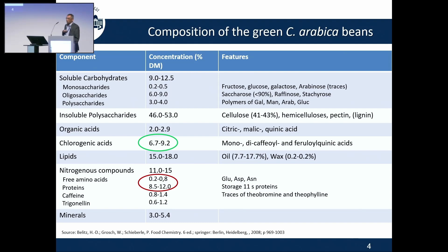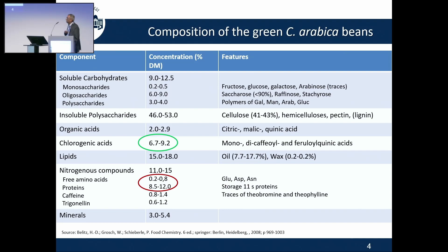I would like to point to chlorogenic acids, the proteins, and the free amino acids — that's my interest. I've been working with them, and I'm interested in the interaction of these two compound classes. When we refer to chlorogenic acid, there are mono-decafeoyl ferulic acids. Some nine components are the major ones, and literature shows that up to 50 to 60 components are present in coffee. The 5-CQA, or 5-chlorogenic acid, is the most prominent one, which makes up about 60% of the chlorogenic acids.